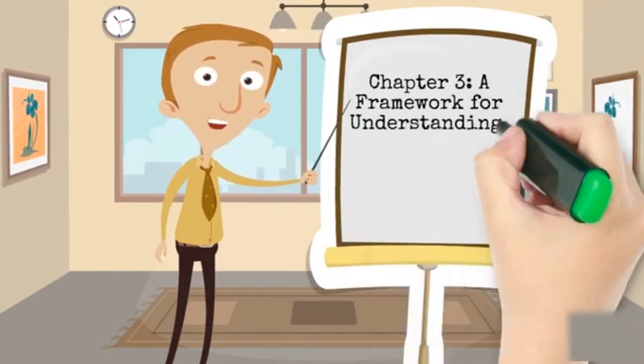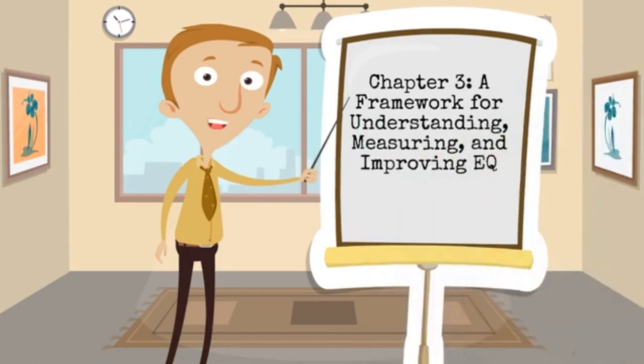Chapter 3: A Framework for Understanding, Measuring, and Improving EQ. The authors present a framework of four EQ skills. Self-awareness and self-management which represent our personal competence. Social awareness and relationship management which represent our social competence.